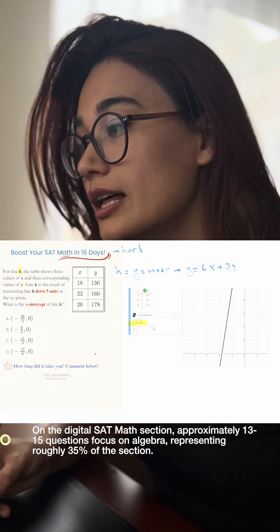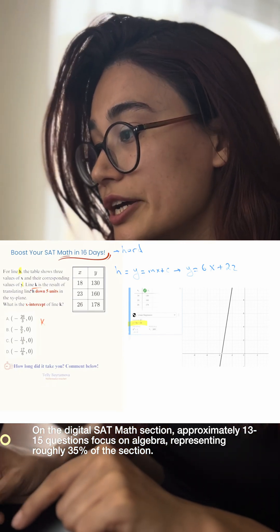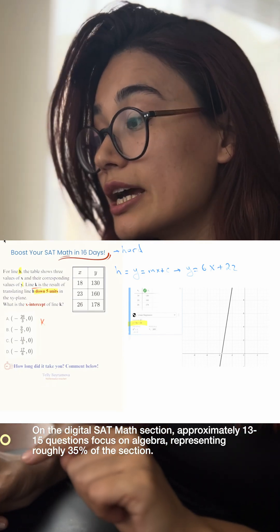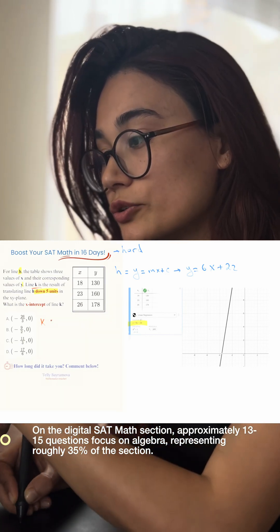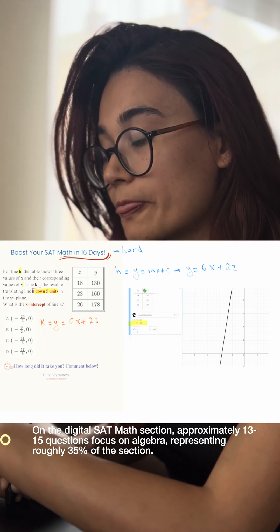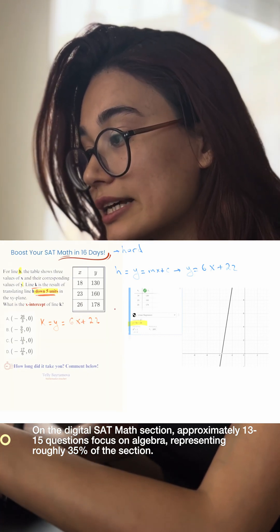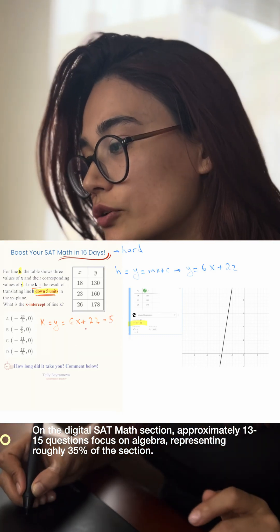Five units down from h. So h is 6x plus 22, then the equation of k will be 6x plus 22, right? Then five units down—that's why minus 5. Five units down means minus 5, so the new y will be 6x plus 17. What does the question ask? The question asks you: what is the value of the x-intercept?